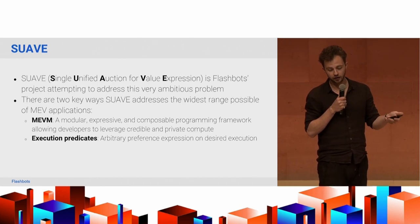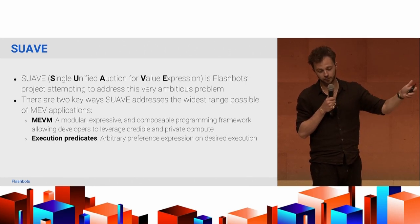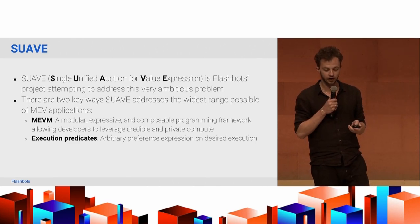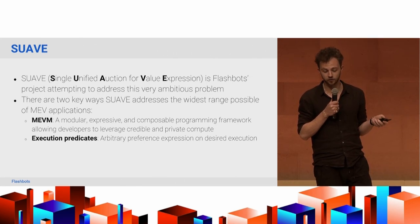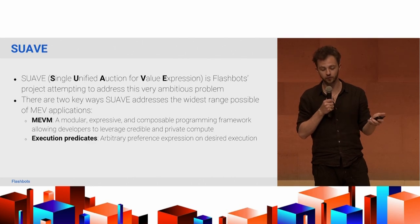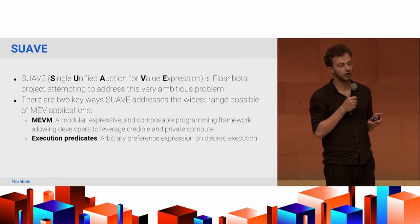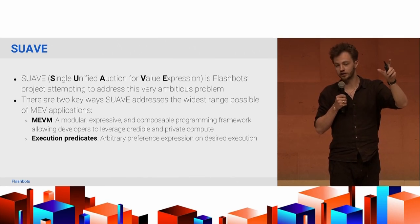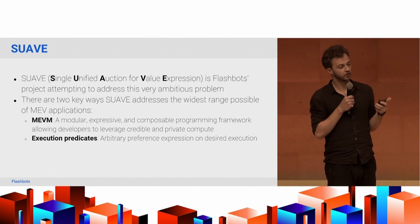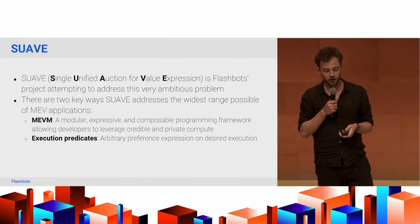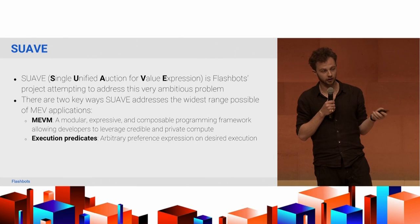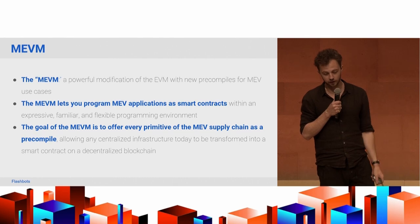What I want to get across today is that there are two key ways that SUAVE addresses this in the broadest way possible. The first is the MEVM — we just announced this last week. It's a modular, expressive, composable programming framework that allows developers to leverage credible and private compute. The second is what we call execution predicates — arbitrary preference expression on the execution you desire.